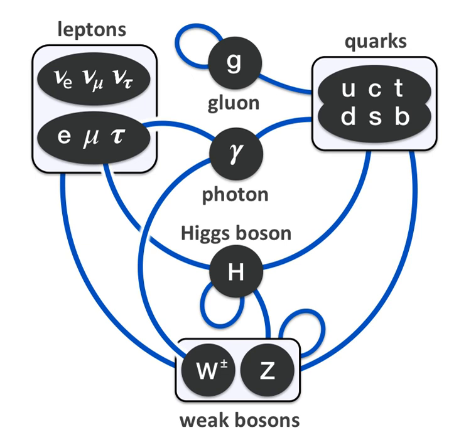Although the standard model is believed to be theoretically self-consistent and has demonstrated huge successes in providing experimental predictions, it leaves some phenomena unexplained and falls short of being a complete theory of fundamental interactions. It does not fully explain baryon asymmetry, incorporate the full theory of gravitation as described by general relativity, or account for the accelerating expansion of the universe as possibly described by dark energy.